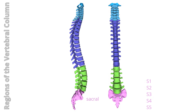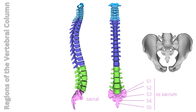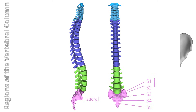Sacral region: formed by five fused vertebrae, linking the spine to the iliac bones and playing a crucial role in hip stability. It articulates superiorly with the 5th lumbar vertebra and inferiorly with the coccyx, and also with the iliac bones.